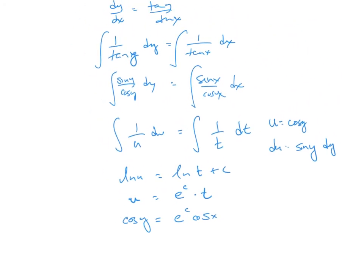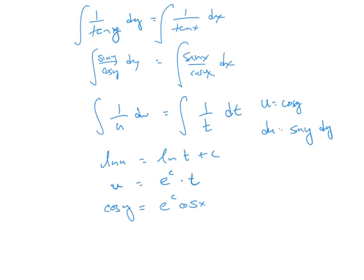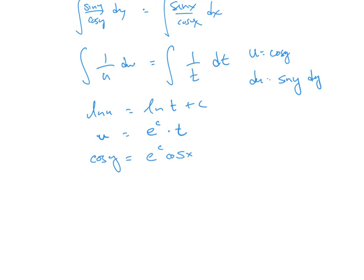And the initial value says y at 2 is 2. So it says y at 2 equals 2, so I get cosine 2 is equal to e to the c, cosine of 2. Dividing that, I get e to the c is equal to 1. So that means cosine of y is equal to the cosine of x.